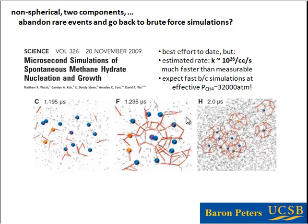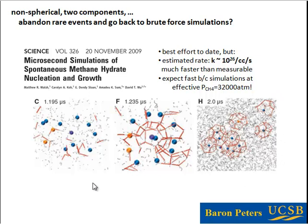There's a good question whether you can look at events happening in these trajectories and actually trust that they are representative of what happens at the much slower conditions in the laboratory or in nature. The insights in these simulations are not necessarily wrong — they reflect a process happening at a much higher driving force. Effectively, nucleation in these simulations is fast because they are run at an effective methane pressure of 32,000 atmospheres. To put this in perspective, the Mariana Trench is about 1,000 atmospheres. So these conditions aren't accessible on the Earth's surface, and we don't expect them to be representative of what's happening in nature.